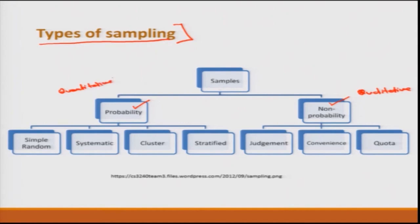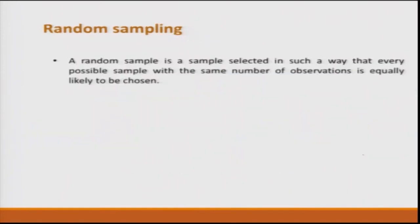In quantitative or probabilistic sampling, I have simple random sampling, systematic sampling, cluster sampling, and stratified sampling. In qualitative sampling we have judgment, convenience, and quota. Let us discuss these one by one.